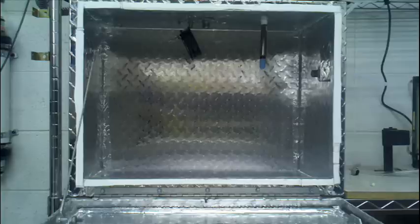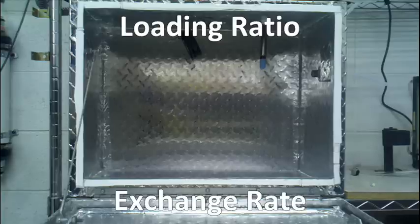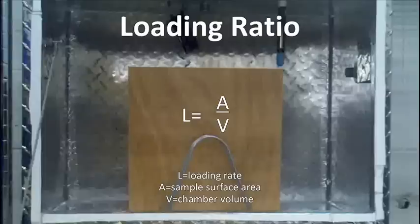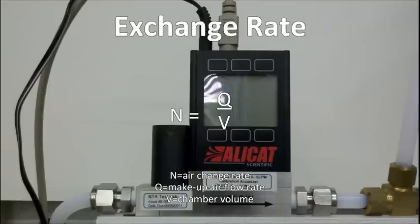There are two main considerations when conducting the test: loading ratio and air exchange rate. The loading ratio is total exposed surface area of each product divided by the test chamber volume. The air exchange rate is the ratio of conditioned and filtered outside air brought into the chamber to the chamber's volume per hour.